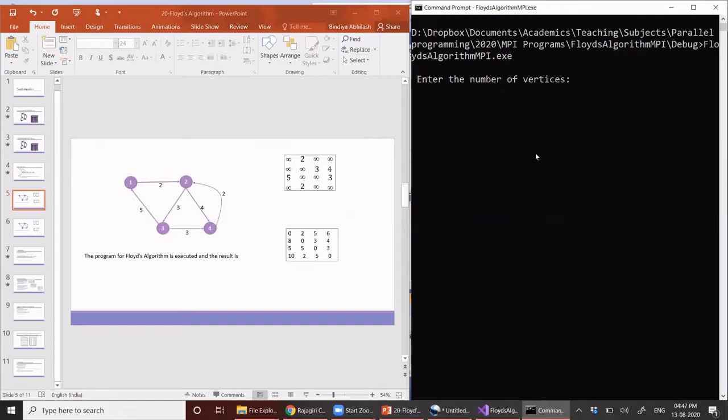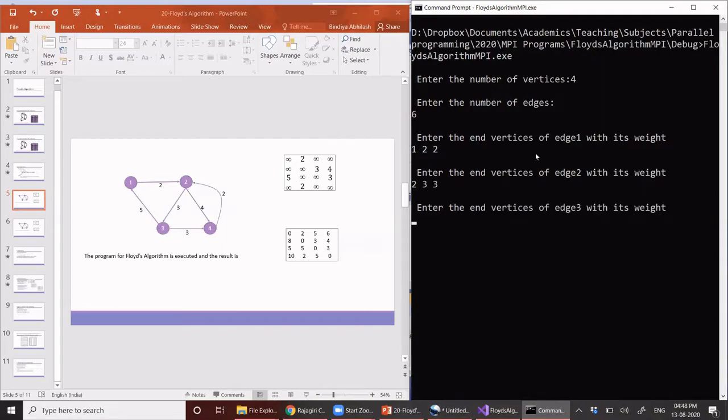Let's execute it. So since in this graph we have four vertices, we'll give this for the number of vertices. For the number of edges we have six edges. Now we need to give each edge information. So one to two, the distance is two kilometers. From two to three, it is three kilometers. From three to one, it is five.